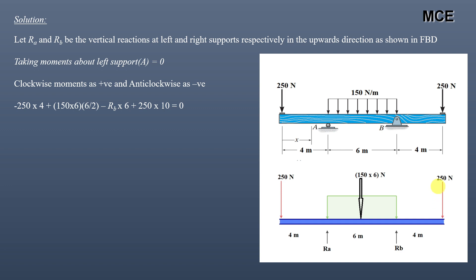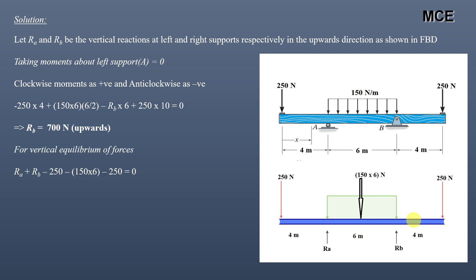The moment of the second 250 newton point load about support A is clockwise with magnitude 250 into 10. From this, we get RB equal to 700 newtons, which is positive, so RB acts in the upward direction as assumed. For vertical equilibrium of forces equal to zero, assuming upward forces are positive and downward forces are negative.